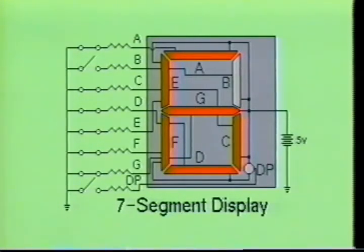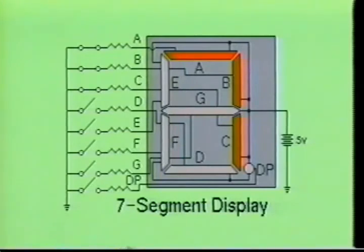Likewise, decimal number six is displayed when segments A, C, D, E, F, and G are energized, and decimal number seven is displayed when segments A, B, and C are turned on.